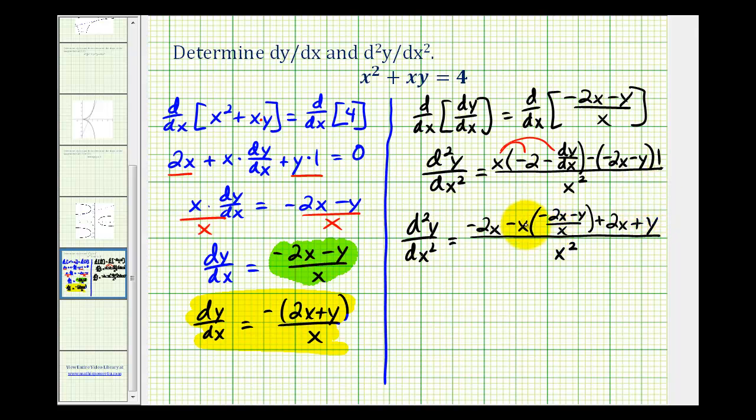The nice thing about this product here is these x's simplify out. So now let's clear these parentheses, and then we'll combine like terms. We'll have x squared in the denominator, and we'll have negative 2x. Here we're going to have plus 2x, and we'll have plus y, plus 2x plus y.